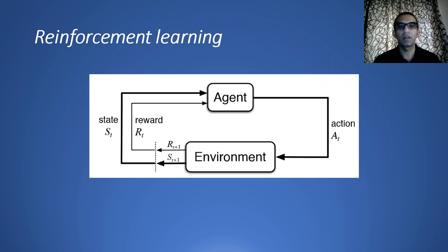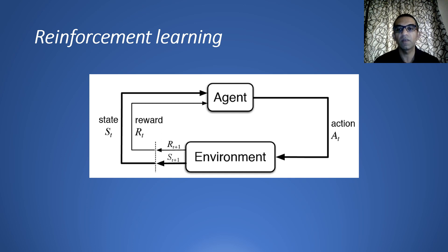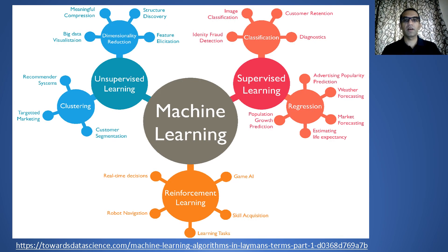Another type is reinforcement learning. Here we have an intelligent agent that performs a set of actions on an environment, and based on those actions, the agent navigates through a set of states. Associated with each state is a reward. A simple example is a robot navigating through a house — if it hits an obstacle, it gets a negative reward; if it moves without hitting an obstacle, it gets a positive reward. We optimize rewards using some policy so the robot learns to navigate the home. The algorithm learns to optimize a particular task based on rewards, states, environment, and actions.